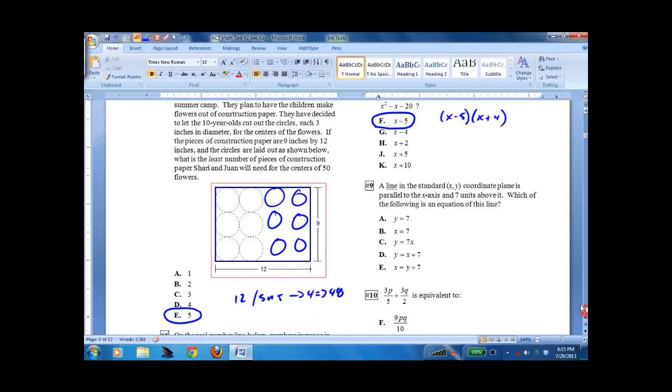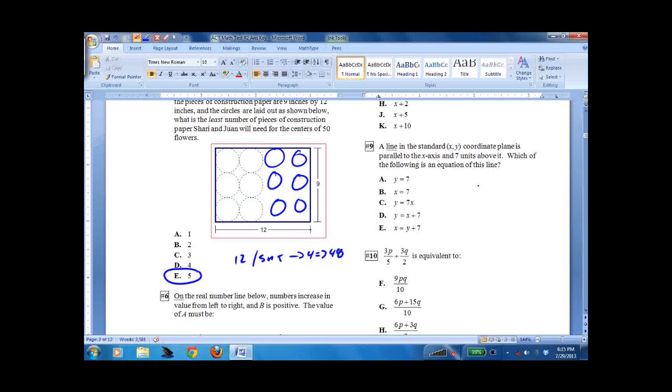Number 9, a line in the standard coordinate plane is parallel to the x-axis and 7 units above it. Well, hopefully you know that's y equals 7.